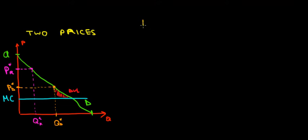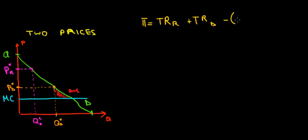What's going to be our profit? The profit is going to come from two sources: total revenue from the regular customers and total revenue from the discount customers. We also have total cost, which is going to be fixed cost plus marginal cost times the total quantity. The total quantity is made up of the quantity sold to the regular customers plus the quantity sold to the discount customers. This is going to be our total cost function.